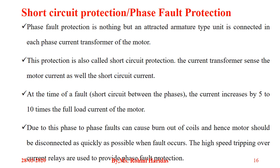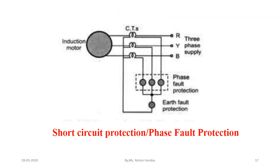CTs are connected in each phase and phase fault protection relays — which are overcurrent relays — are connected in the CT secondary. Under normal operating conditions, the CT secondary current is within the permissible rated limit and the relay does not operate. If a fault occurs, the primary current increases to a high value, the CT secondary current also becomes very high, and if it exceeds the preset value, the overcurrent relay operates, providing protection against short circuits and phase faults.